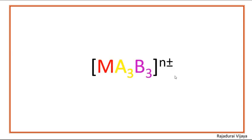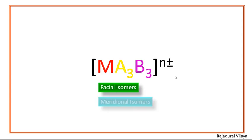For this question, only the MA₃B₃ type complexes can have facial and meridional isomers, where M is the central metal ion, A is one type of ligand, B is another type of ligand, and N is the oxidation number of the central metal ion. Now we see what a facial isomer is.